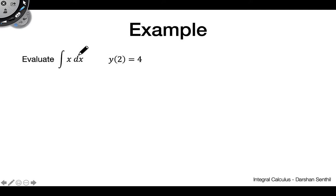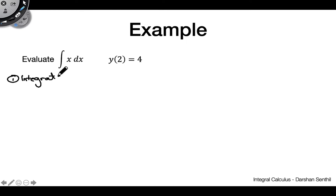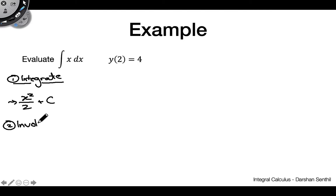Let's do a couple of examples so you can see the algebra behind how we solve initial condition problems. First example: we're finding the integral of x dx, but with the added constraint that y(2) equals 4, where y is our antiderivative. This is exactly the same thing we did in the graph earlier — this just shows the algebra behind it. The first step is to integrate, which gives us x squared over 2 plus c.